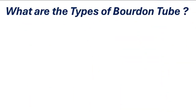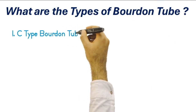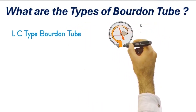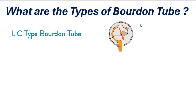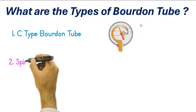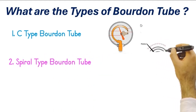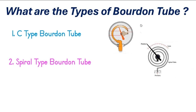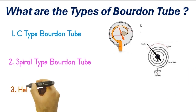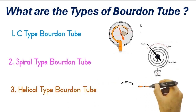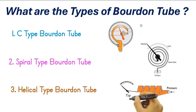What are the types of Bourdon tube? There are three types. Number one: the C-type Bourdon tube, which is the most widely used and is used for medium to high range pressure measurement. Number two: the spiral-type Bourdon tube, used in rugged industrial environments where mechanical stress and vibration are common. Number three: the helical-type Bourdon tube, suitable for applications requiring precise pressure measurement, like laboratories.